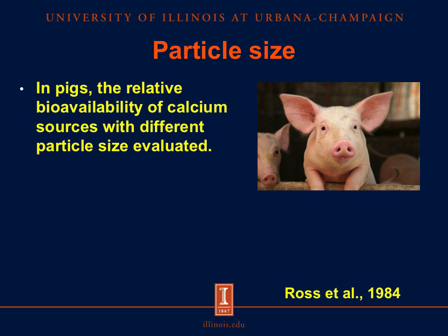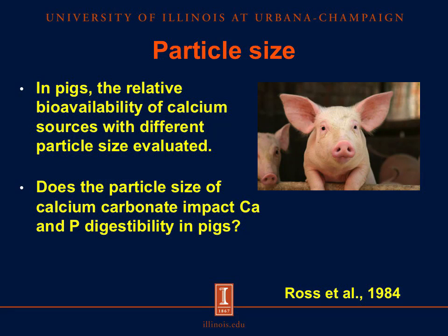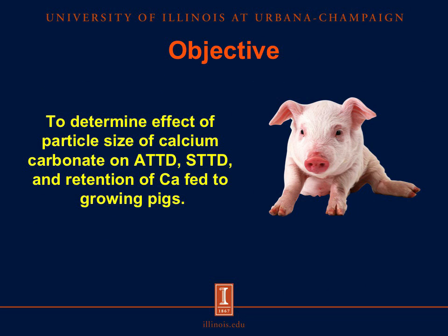The only data available on the particle size of calcium carbonate fed to pigs comes from Ross and coworkers. In 1984, they evaluated the relative bioavailability of calcium carbonate at various particle sizes and observed no differences. However, to our knowledge, no data are available for the digestibility of calcium among diets containing calcium carbonate ground to different particle sizes. Therefore, the objective of this experiment is to determine the effect of particle size of calcium carbonate on apparent total tract digestibility, standardized total tract digestibility, and the retention of calcium fed to growing pigs.